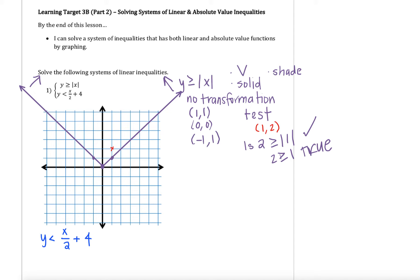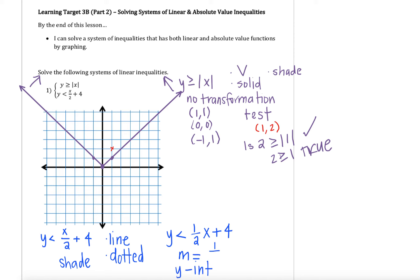Now let's look at our second inequality. This is going to be a linear function — we'll get a straight line. It will be a dotted line since we don't have that equals to bar on there, and since we have an inequality we'll need to shade as well. I can rewrite x over 2 as one-half times x, since there's an invisible 1 in the numerator. Then I still have the plus 4. This makes it easier to identify our slope of one-half, and our y-intercept at (0,4).